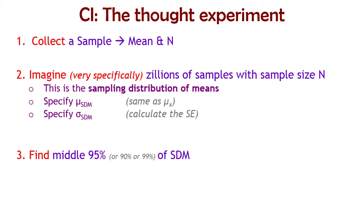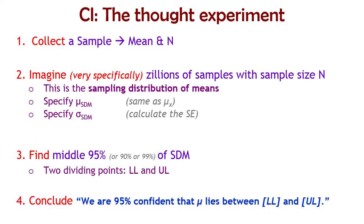It's pretty easy. We have two numbers — the lower limit and the upper limit of that 95%, 90%, or 99% interval. Our conclusion is: we are 95% — or whatever — confident that the true population mean, mu, lies between those two numbers. That's what we got.